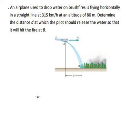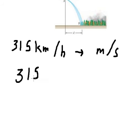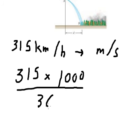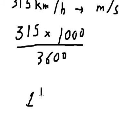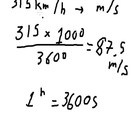We have 315 kilometers per hour. We need to convert into meters per second. So we have 315 multiplied by 1000 to convert this into meters, then we divide by 3600. That's 1 hour equal to 3600 seconds. That's why we need to divide this number. We will have about 87.5 meters per second.